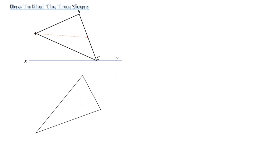Now we are going to trace our constructional line to the plan. What you do is trace the line from A to D so it hits at BC — you can see it's the same BC here — so we trace it down to D and across to A. This line AD becomes our true length. You draw a constructional line from A to D, trace it down to the plan, and trace across to A — that is the true length.